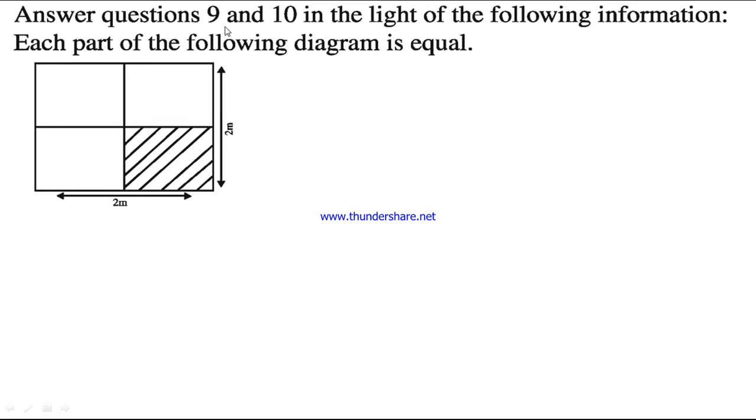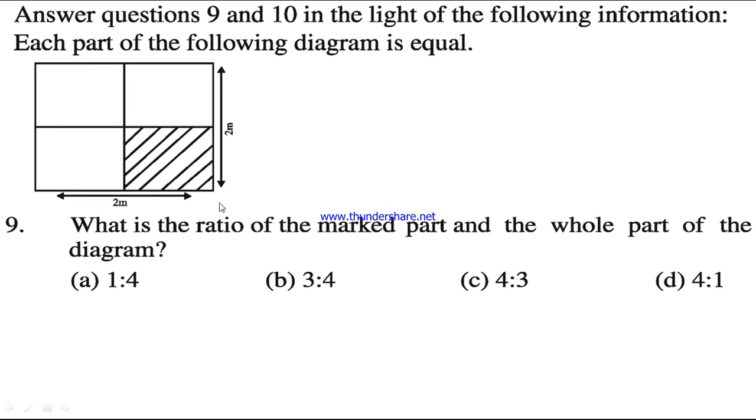Answer questions 9 and 10 in the light of the following information. Each part of the following diagram is equal. Question number 9. What is the ratio of the marked part and the whole part of the diagram? The marked part is 1 fourth, so the ratio will be 1 is to 4.